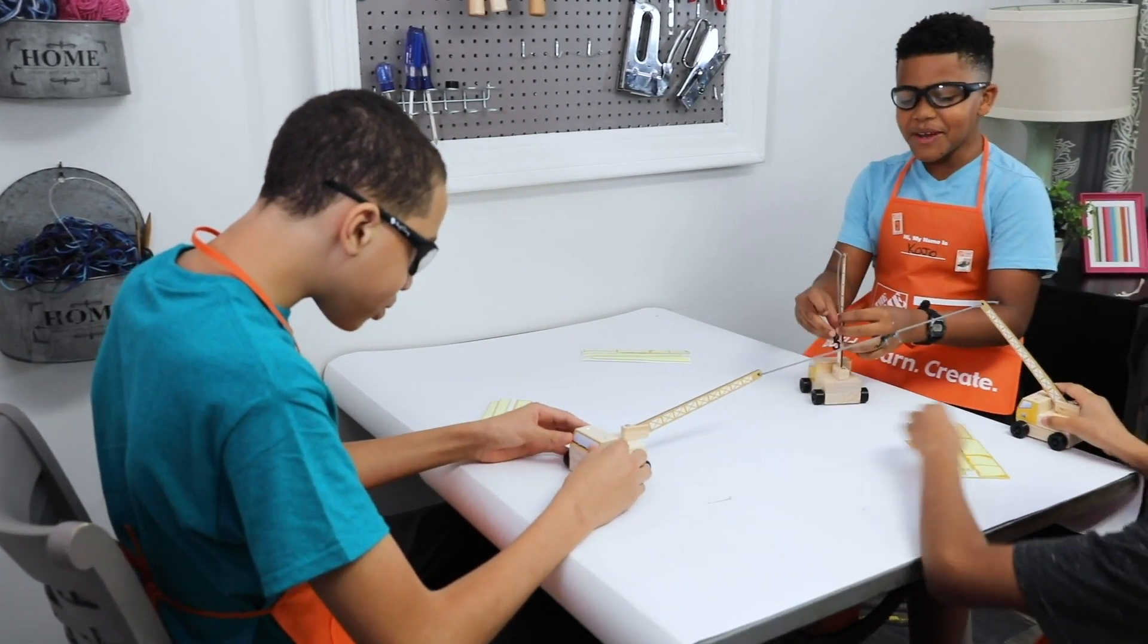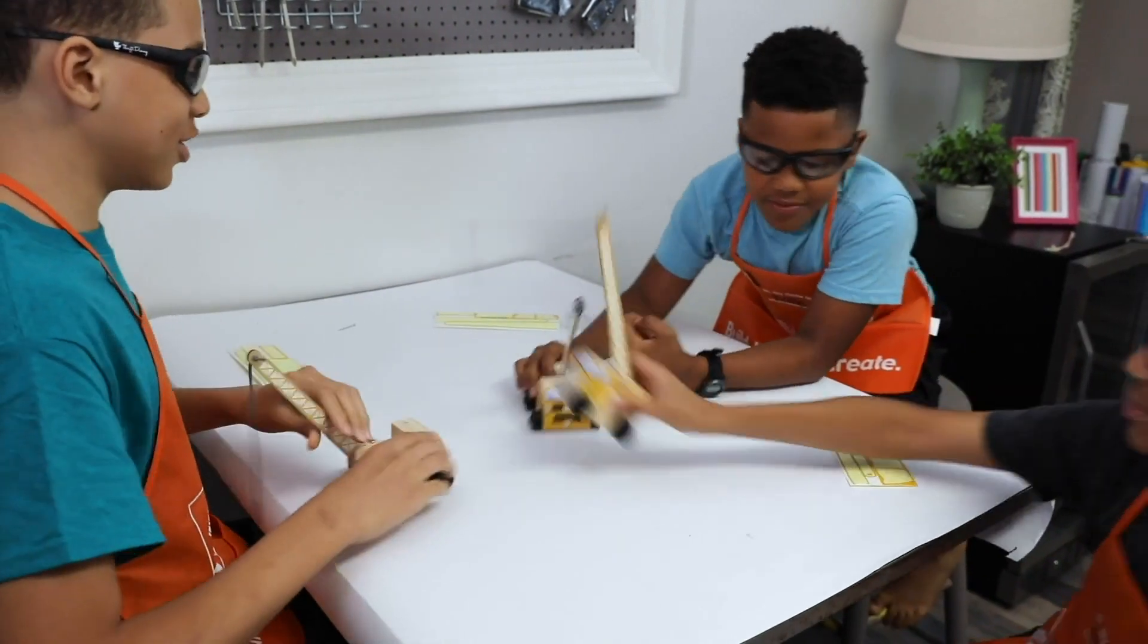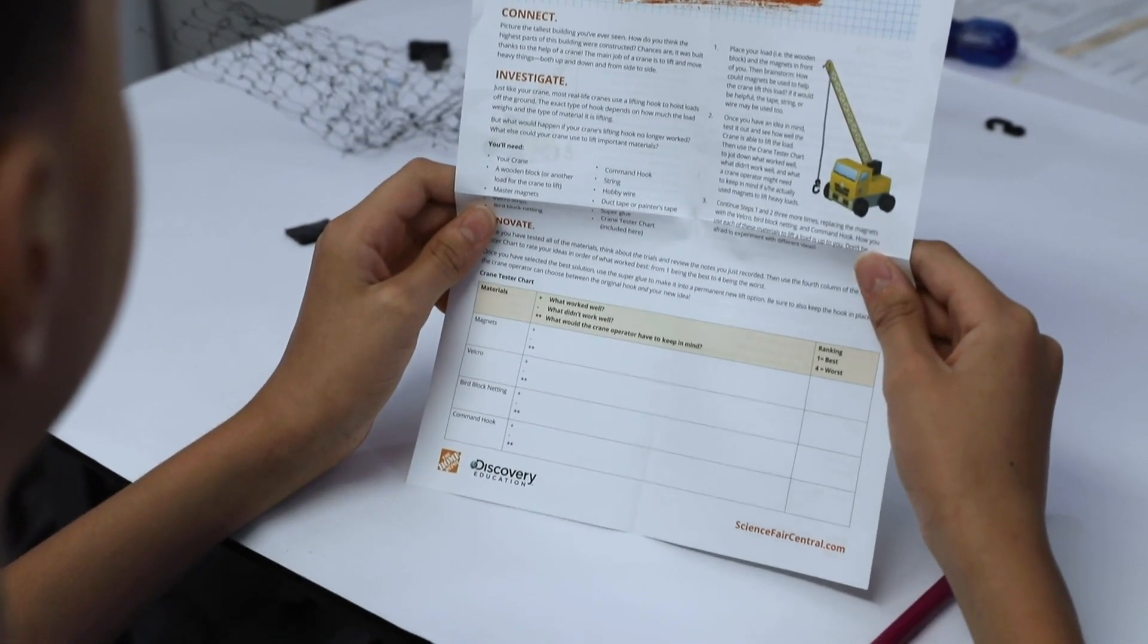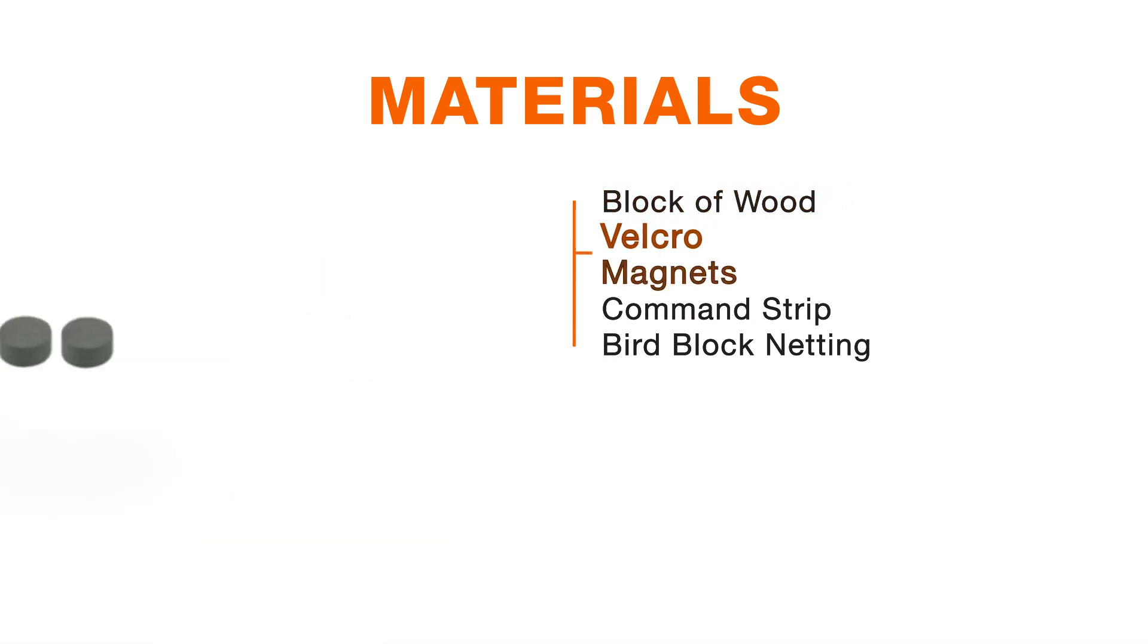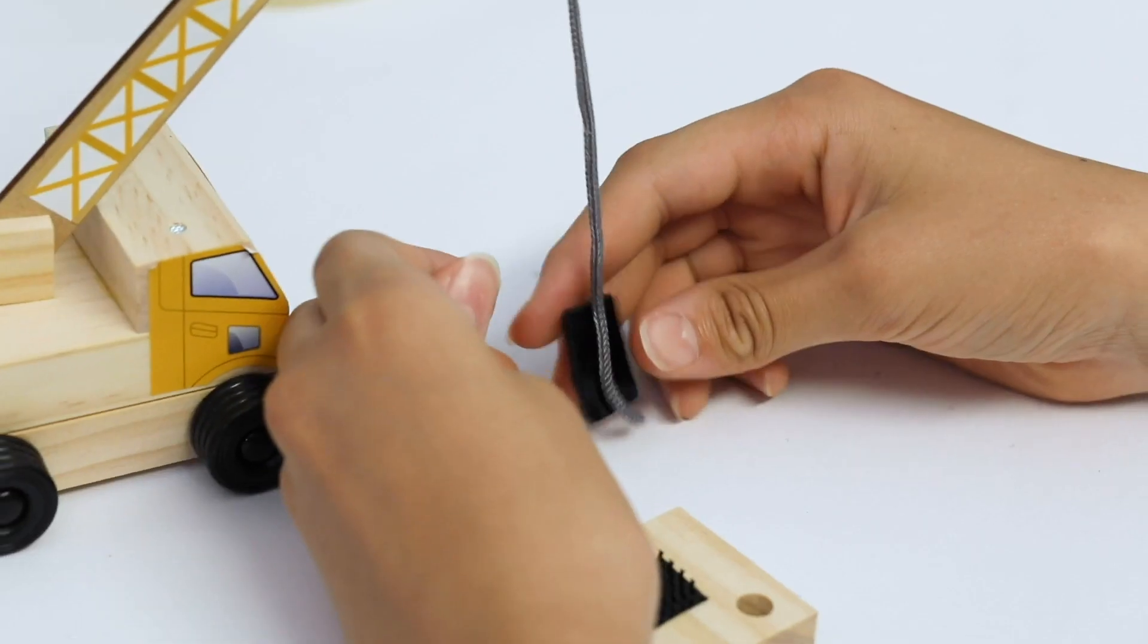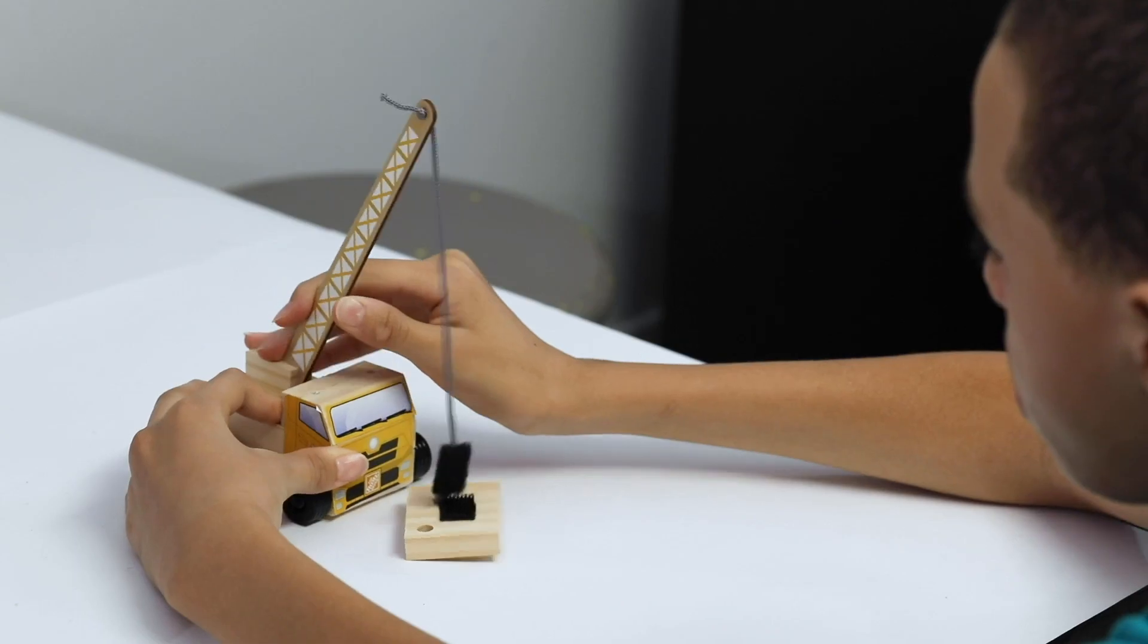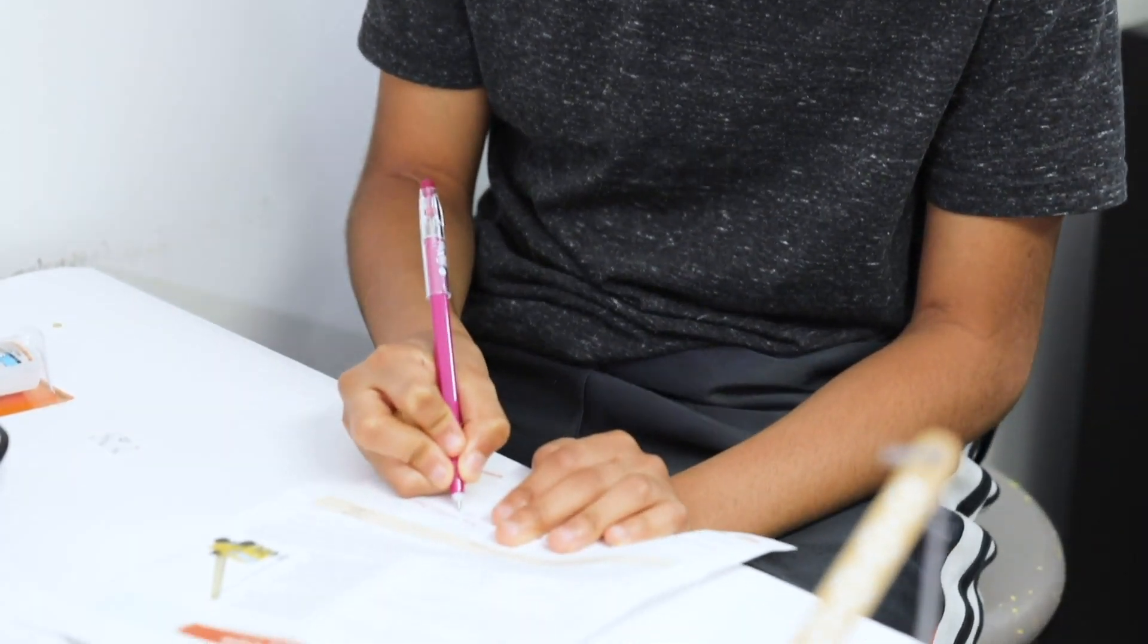Once the cranes are done, then it's time to get the kids thinking about science and putting these cranes to test. So we actually use different materials based on this sciencefaircentral.com workshop extension activity where the kids were going to test with different materials. We needed a block of wood, some velcro, magnets, and a command strip, and we even used some bird block netting. And the kids had to figure out which material was going to be the best for picking up this load, which was a block of wood. So one kid did the testing, another kid did the writing, and I think the other kid just made a bunch of noise in the back.